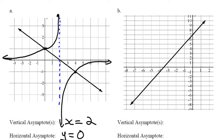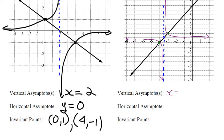Another straight line — same process. Draw the asymptote, find invariant points here and here. No max or min. As these values go down, reciprocal values go up to the asymptote. As these values go up, reciprocal values come down toward zero. Vertical asymptote: x = negative 3.5. Horizontal asymptote: y = 0. Invariant points: (negative 3, 1) and (negative 4, negative 1).